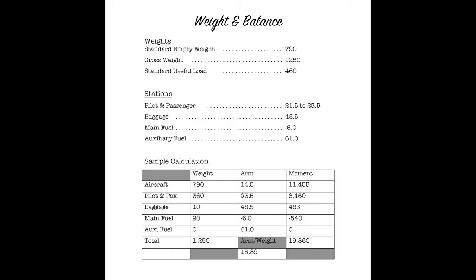Then the main fuel tank - in this example we have 90 pounds of fuel. That's 15 gallons, right? Yep. Which would be a full tank in the main fuel tank. The arm is negative 6, so the moment is negative 540. This has no fuel in the aux tank, but that would be an arm of 61. So that's way in the back, behind us.